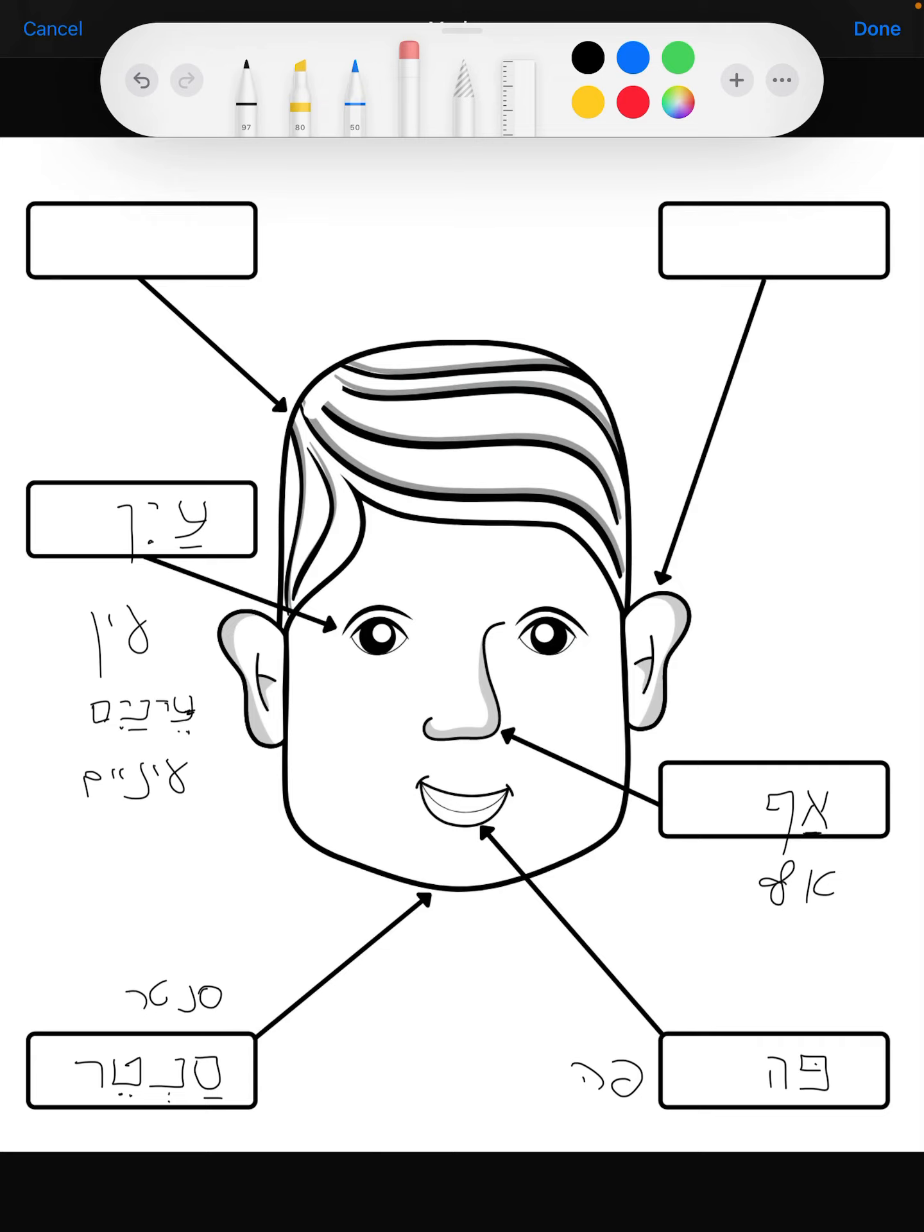Next we are going to do our hair, this person's hair. How do we say hair in Hebrew? Hair in Hebrew is sear. Let's write it down. This dot right here signifies it's a sin and not a shin.